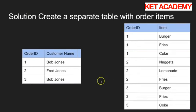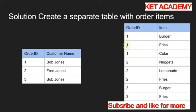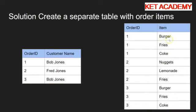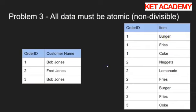It's going to look like this. This table has an order ID in one column and the item corresponding to that order ID. So order ID 1 has a burger, order ID 1 also has fries, and order ID 1 also has a coke. Each item in this table is now unique and there are no multiple values per cell. That's the second bit sorted.